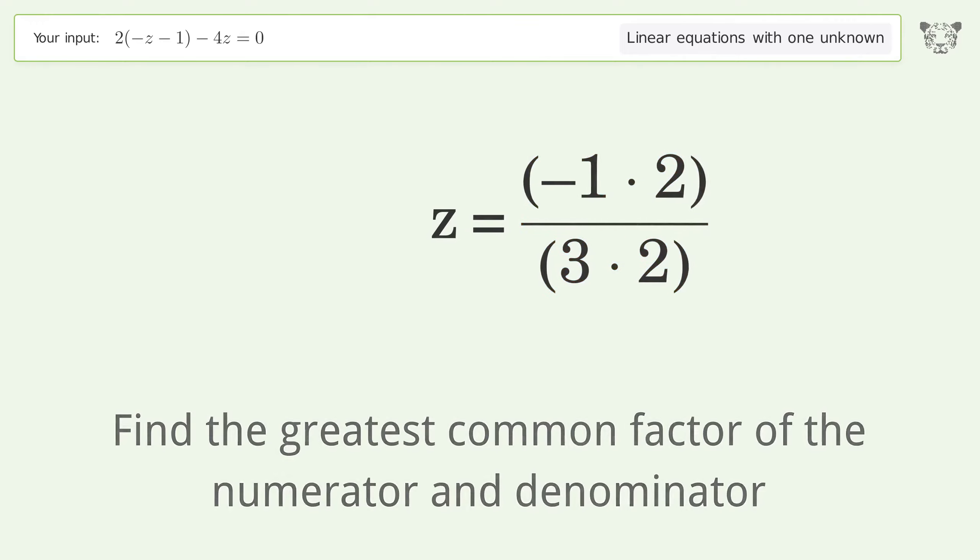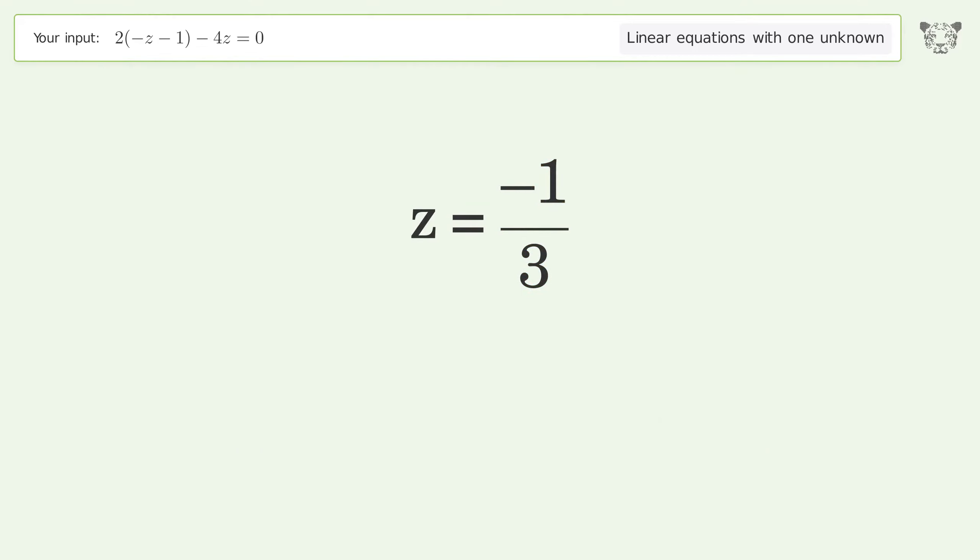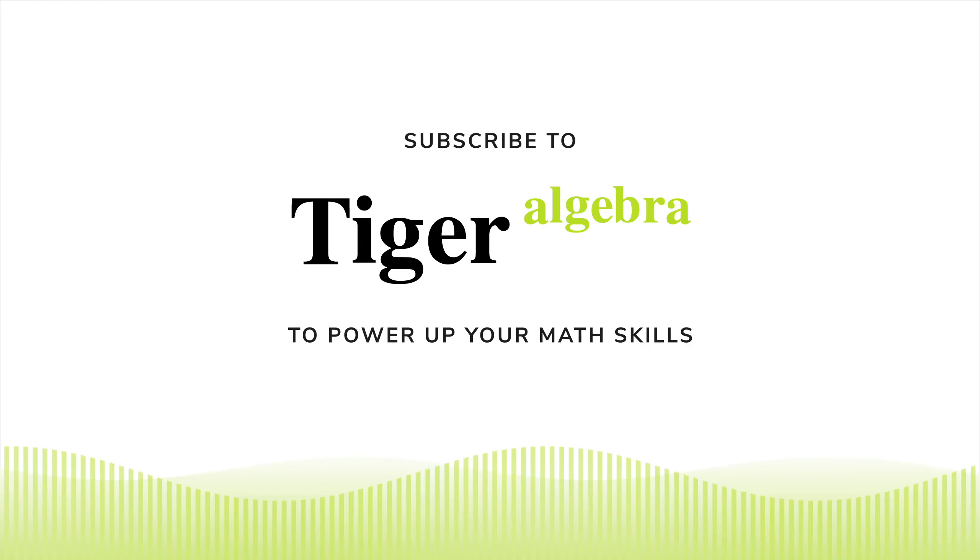Find the greatest common factor of the numerator and denominator. Factor out and cancel the greatest common factor. The final result is z equals negative one-third.